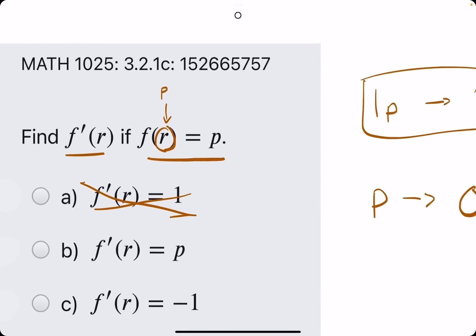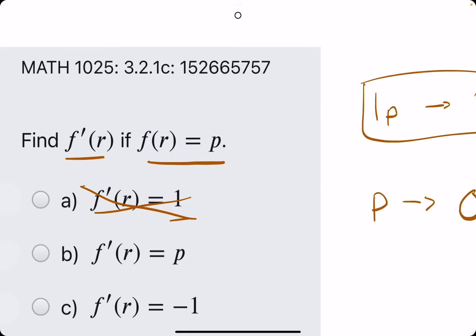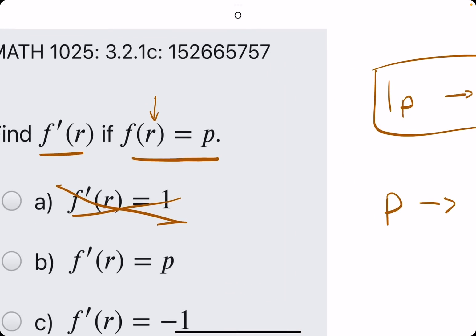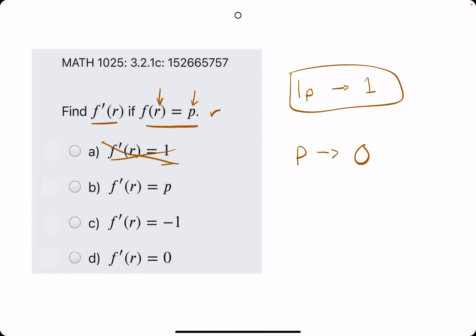So they'll try to trick you. Be cautious, pay close attention to if they mix up the variables here. We need to see the r in this function for the function's derivative to not be 0.